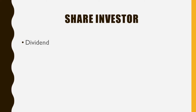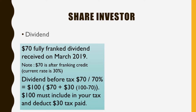Franked dividends can be fully or partially franked. Fully franked means the entire dividend amount has franking credits, and partially franked means only part of it does. You can find this information on your dividend payment detail statement. For example: a fully franked $70 dividend received in March 2019 would have a franking credit of $30. Using the formula — $70 divided by 70% equals $100 — and then deducting the $70 received gives the $30 franking credit. You add $70 plus $30 to get $100 as assessable income, and the $30 franking credit is used to reduce your tax payable.